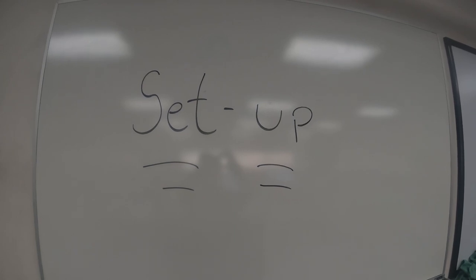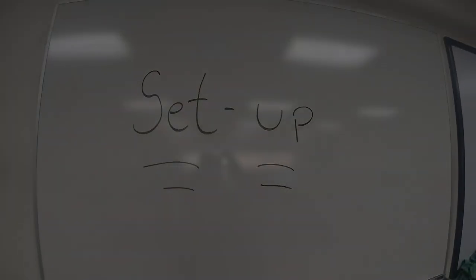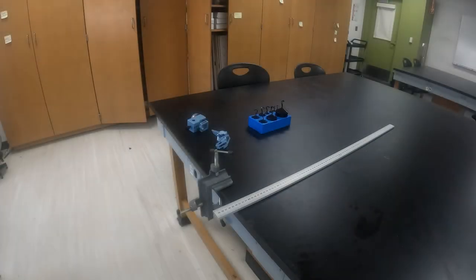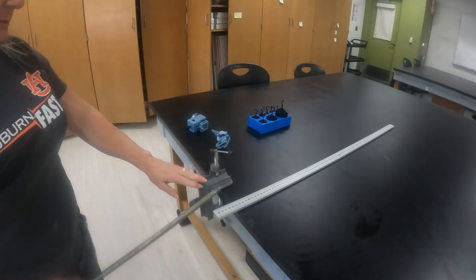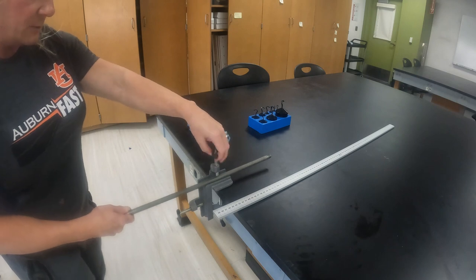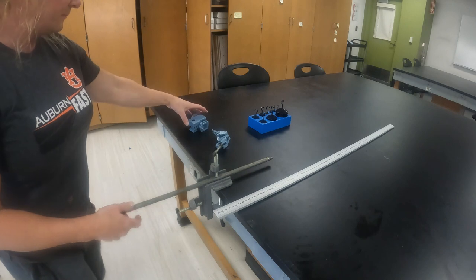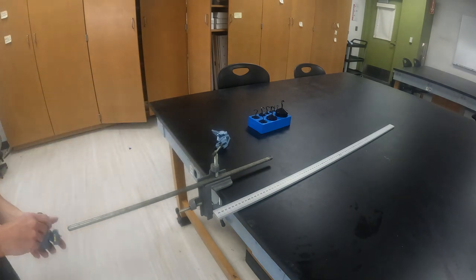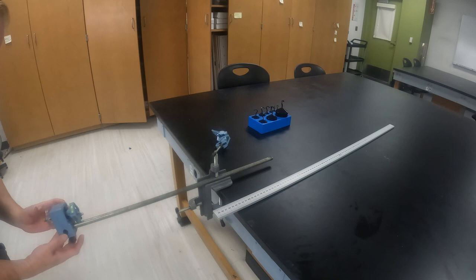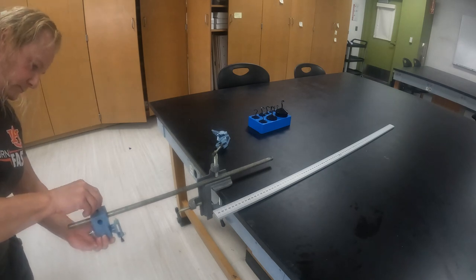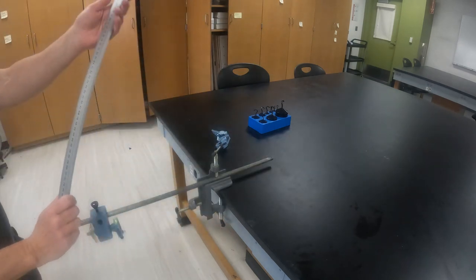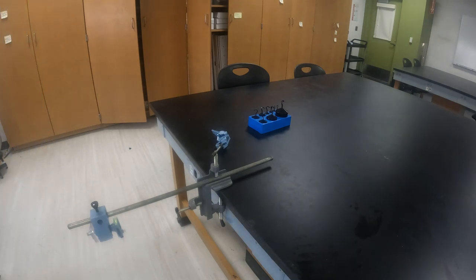Set up. When we set this up, we attach the clamp to the table, put the rod through, fasten it onto the table, take our pivot, and attach the pivot to the rod.